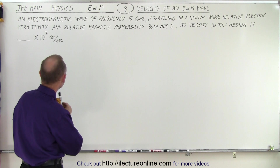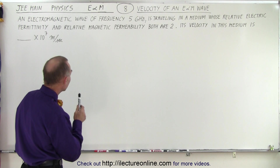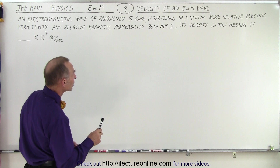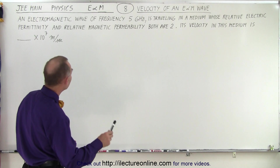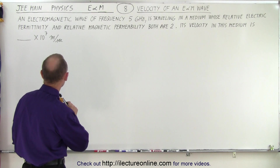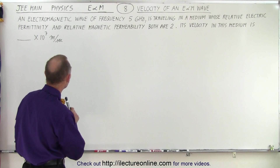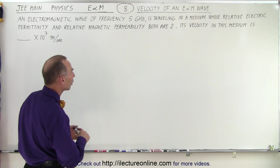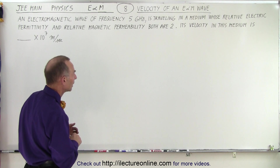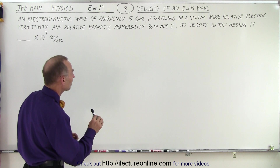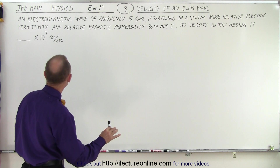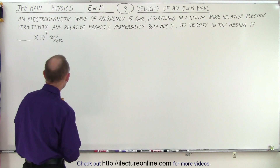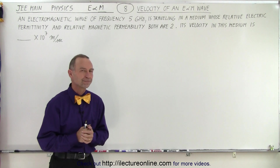An electromagnetic wave of frequency 5 gigahertz is traveling in a medium whose relative electric permittivity and relative magnetic permeability both are 2. Its velocity in this medium is blank times 10 to the 7 meters per second.